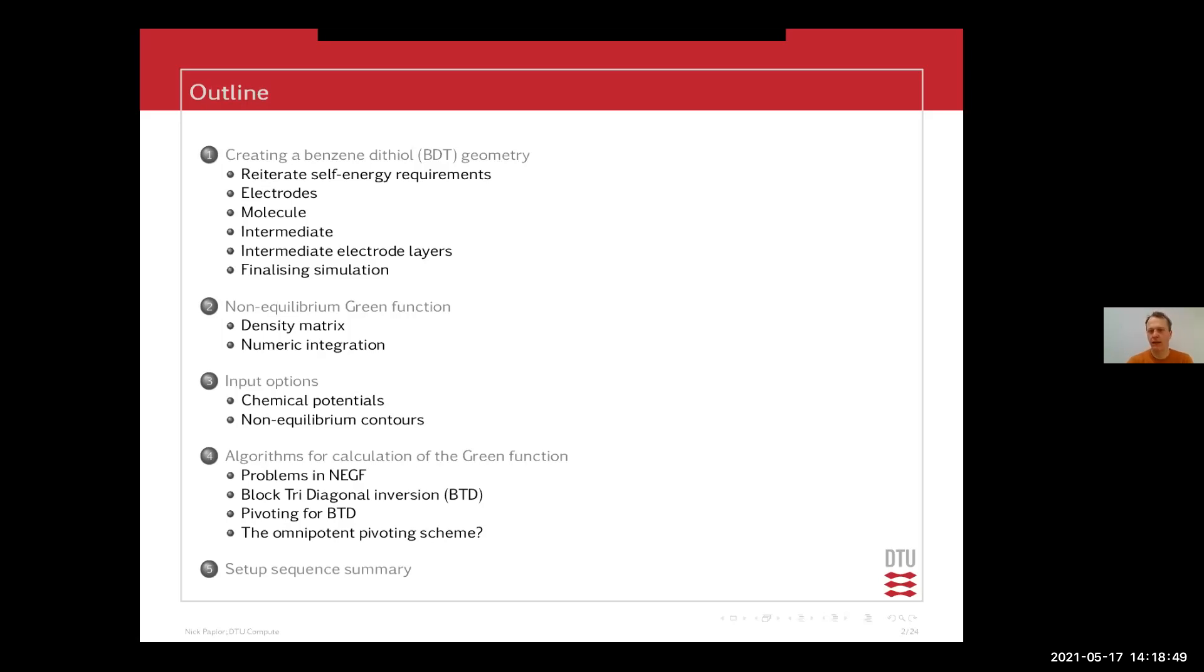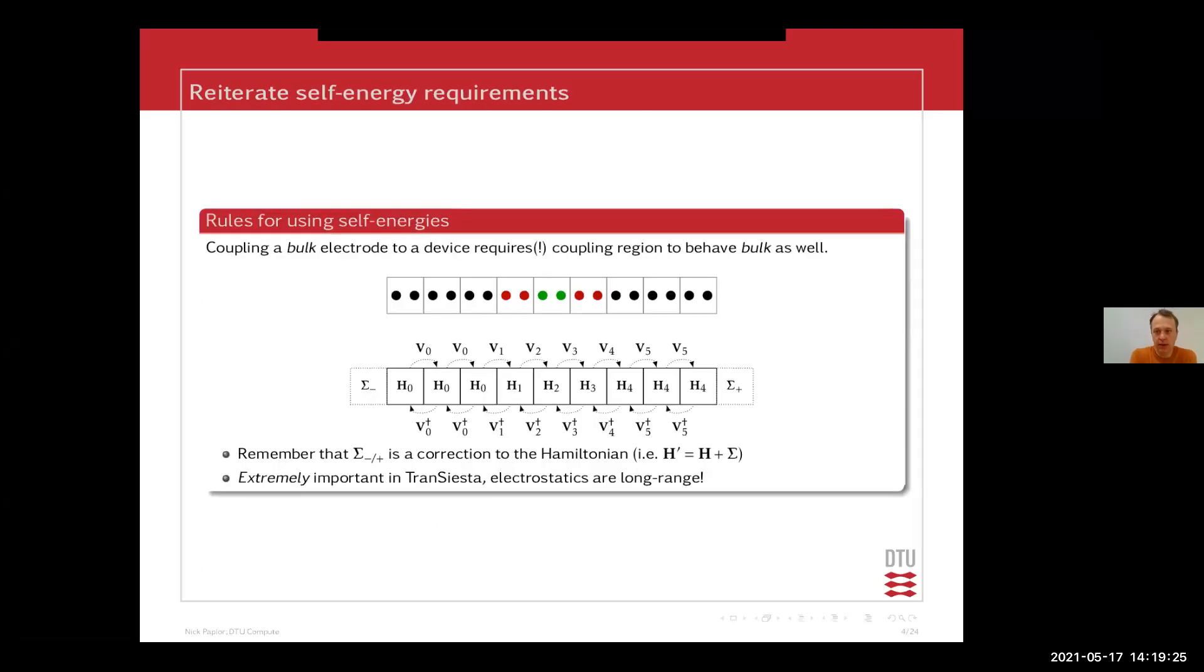What you have been working on so far have been tight binding calculations. And there this interplay between electrodes and the device region isn't really, I mean you know what you have there, you know what you have of couplings and you know what the potential landscape looks like. But when you are starting to do density functional theory calculation in combination with the Green's function method, it's not as trivial in this sense, simply due to the screening length of your device region.